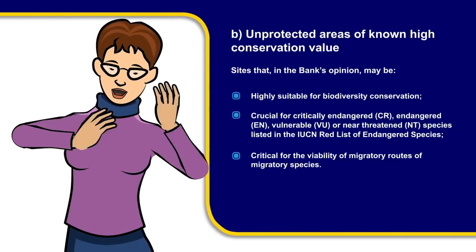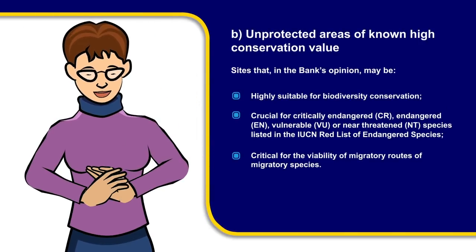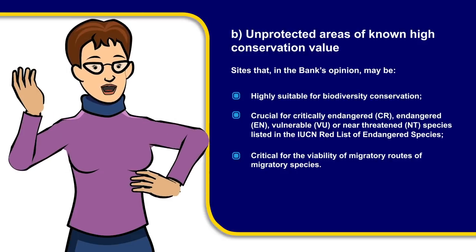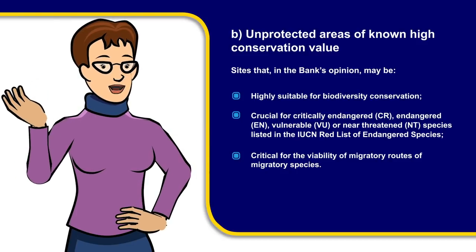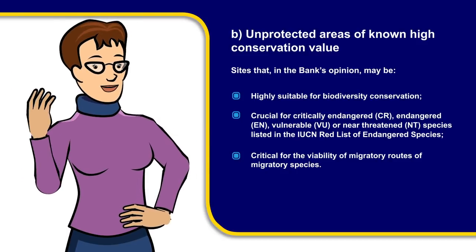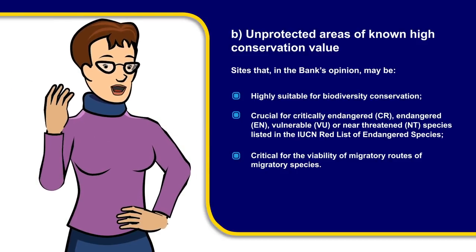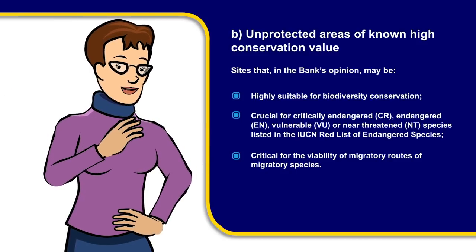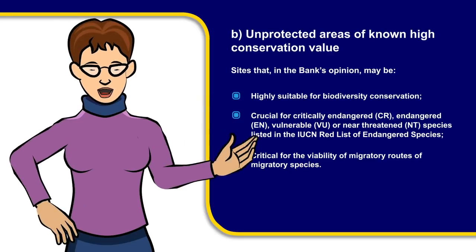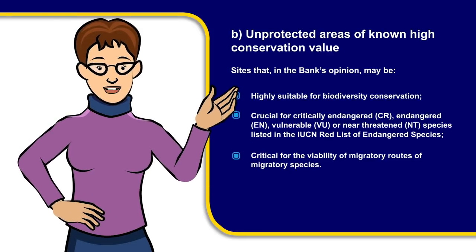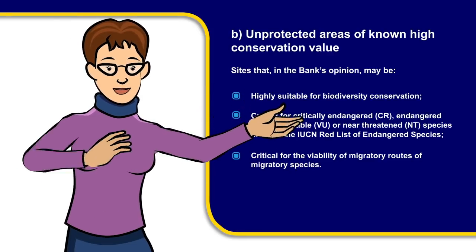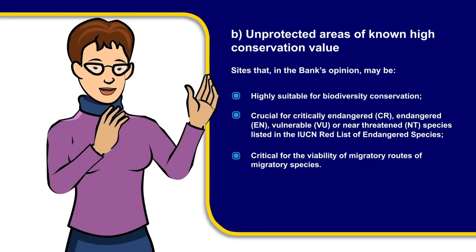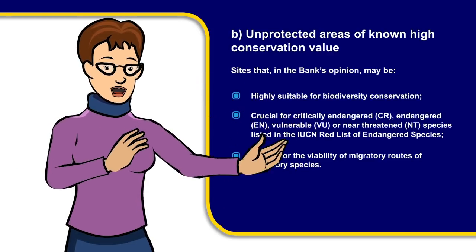But what exactly are these? Key biodiversity areas are areas considered very important for biodiversity, as they contain IUCN red-listed species, rare habitats, and unique ecosystems.